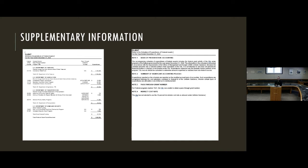Moving on, this is the supplementary information — specifically the SEFA for this client, which Michael presented just before this. Verify that the amounts are correct, that the correct pass-throughs are correct, and verify the correct ALN numbers. Michael talked about how it's changed from CFDA to ALN very recently — this one might actually should have had ALN numbers as well, so that's another area where there may be a small typo. On the right side is the notes to the SEFA, which talks about your basis of accounting and accounting policies related to your federal expenditures. It also states for any pass-through grant numbers listed as 'N/A' that the client was unable to get the pass-through grant identifying number. The indirect cost rate section is a required disclosure for the 10% de minimis rule.